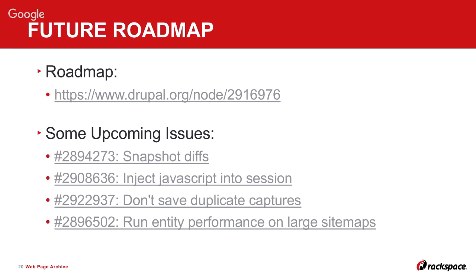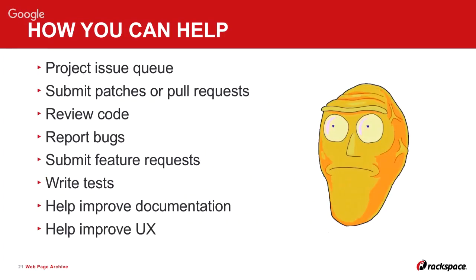How can you help? The project issue queue is the first place to go. If you have an idea or a solution to a problem, go submit a patch or pull request on GitHub. Review code, report bugs, submit feature requests, write tests. Improved documentation is a big one — it's informative but very long and probably needs to be split up into a wiki. If anyone is good at UX, specifically around Views, I'll take that too.